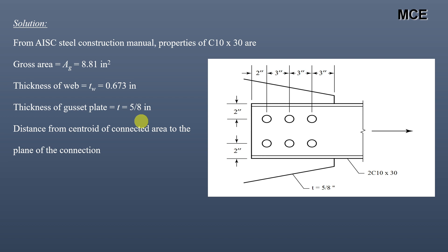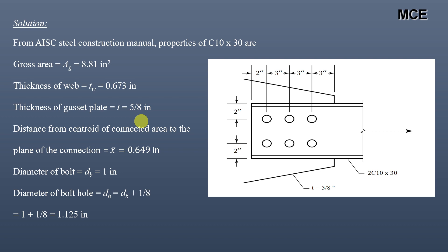The distance from the centroid of the connected area to the plane of the connection, x̄, is given in the construction manual as 0.649 inch. Diameter of the bolt is 1 inch, which means the diameter of the bolt hole is diameter of bolt plus 1/8, which equals 1.125 inch.